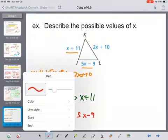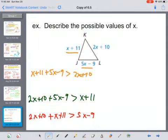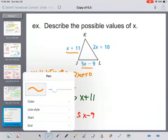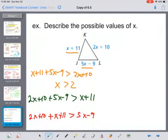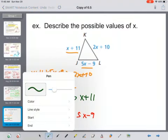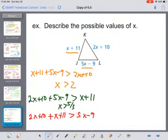The first one, when we solve that, we would get x is greater than 2. The second one, when we solve that one, we would get x is greater than 5 thirds. And then the third one, when we solve that one, we would get x is less than 15. So we have three inequalities then. Greater than 2, greater than 5 thirds, and less than 15.